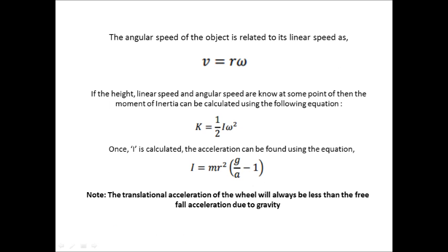The angular speed of the object is related to its linear speed as v equals r omega. If the height, linear speed, and angular speed are known at some point, then the moment of inertia can be calculated using the following equation, where k is a constant.